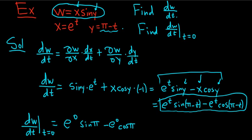So e to the zero is one. Sine of pi is zero. Cosine of pi is negative one. And this here is one, so we get negative negative one, so we just get one.